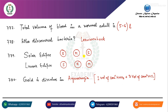Gold is dissolved in Aqua Regia — 1 volume of concentrated HNO3 plus 3 volumes of concentrated HCl.